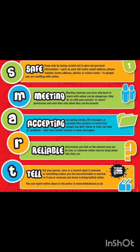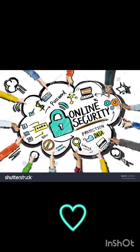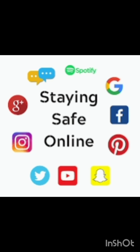D — tell a trusted adult if you feel insecure. Share with your teachers, parents, or contact Childline 0800 1111. Last but not the least, be smart with a heart. Remember to always be smart with a heart, by being kind and respectful to others online. Make the internet a better place by helping your friends if they are insecure.